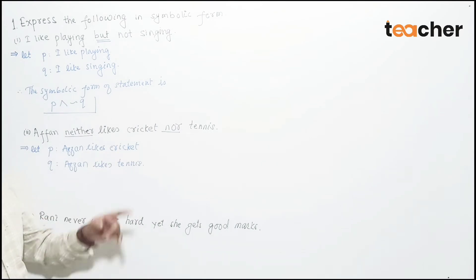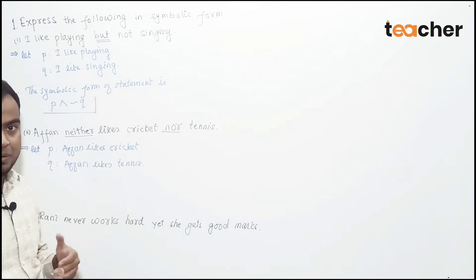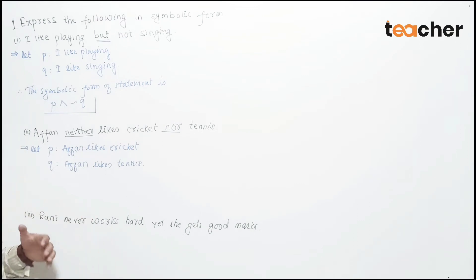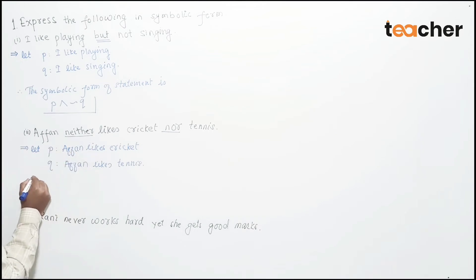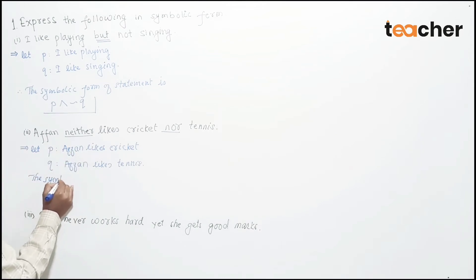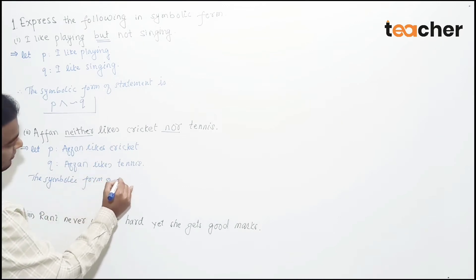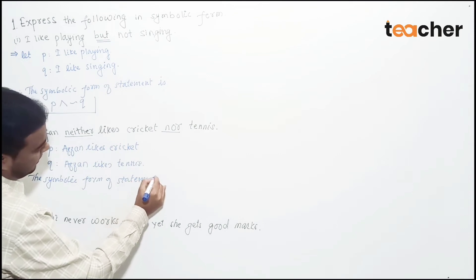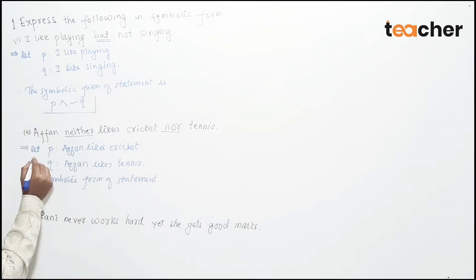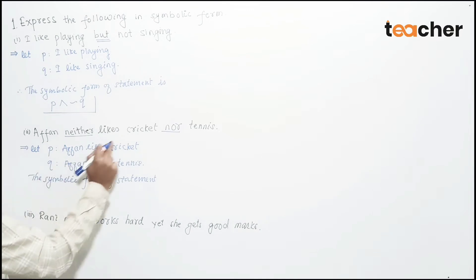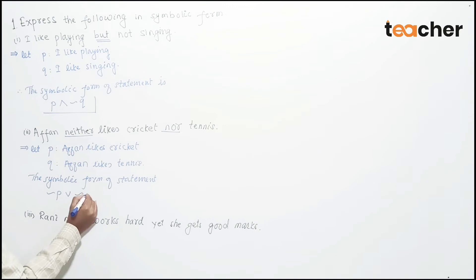Students who have not seen the truth table should click the 'i' button and revise the basics. The symbolic form of this statement is: negation of P disjunction negation of Q — that is, (¬P) ∨ (¬Q). This is the symbolic form for the 'neither...nor' compound statement.